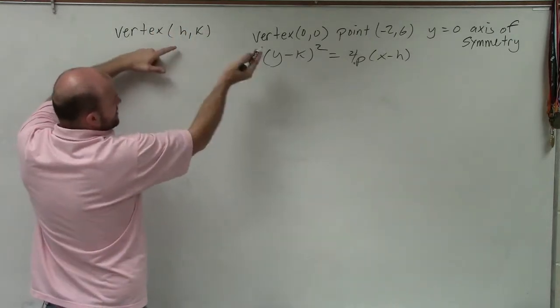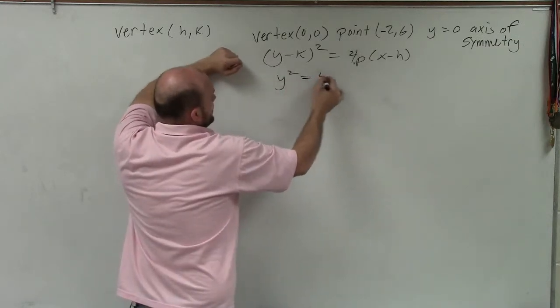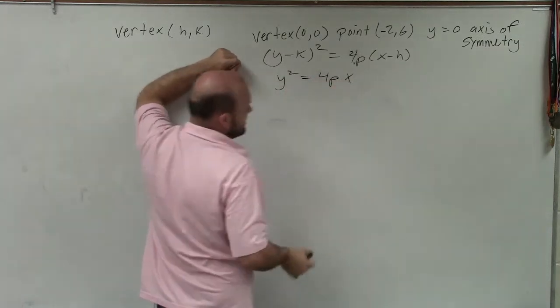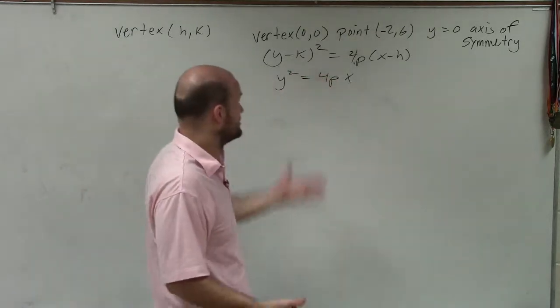And since my vertex here is 0, 0, I can plug 0 in for h and k and just get y squared equals 4p times x minus 0, which is just x. But the problem is we still don't know what p is.